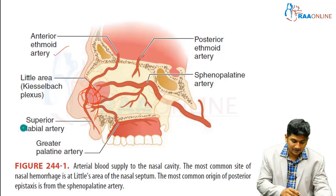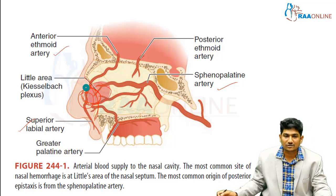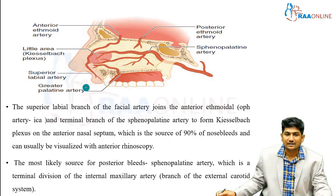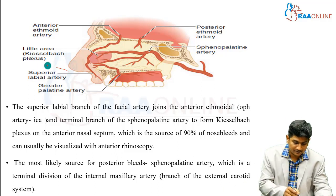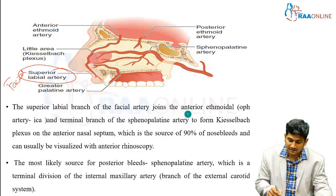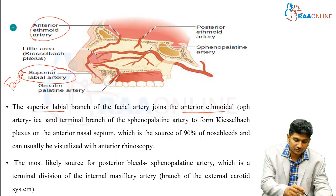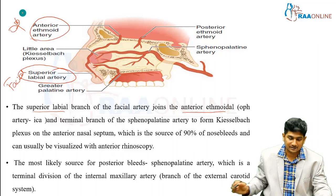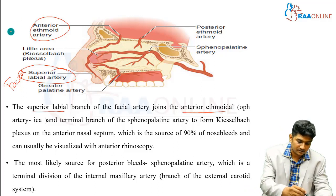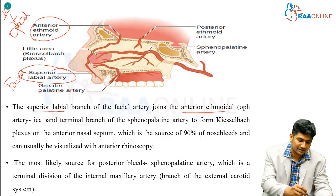You can see the anterior ethmoidal artery, the superior labial artery, and the sphenopalatine artery — this region is called Kiesselbach's plexus or Little's area. The superior labial branch comes from the facial artery, which is a branch of the external carotid system. The anterior ethmoidal artery comes from the ophthalmic artery, which is a branch of the internal carotid arterial system.